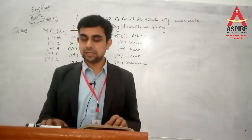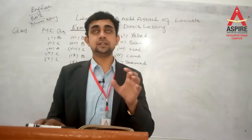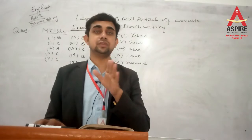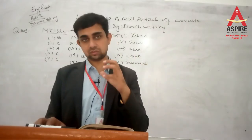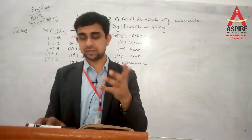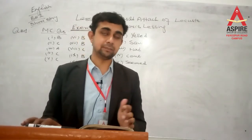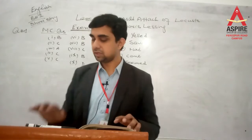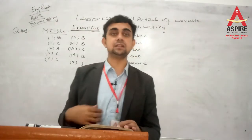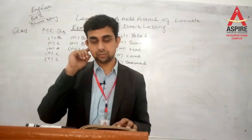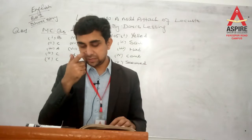Number 10: How did the land look after the locusts had moved to the south? The correct option is D: A devastated landscape — ایک تباہ شدہ زمین کا ٹکڑا تھا. So number 10's answer is D. You can see all answers written on the whiteboard as well. Note that true/false questions do not appear in the paper.